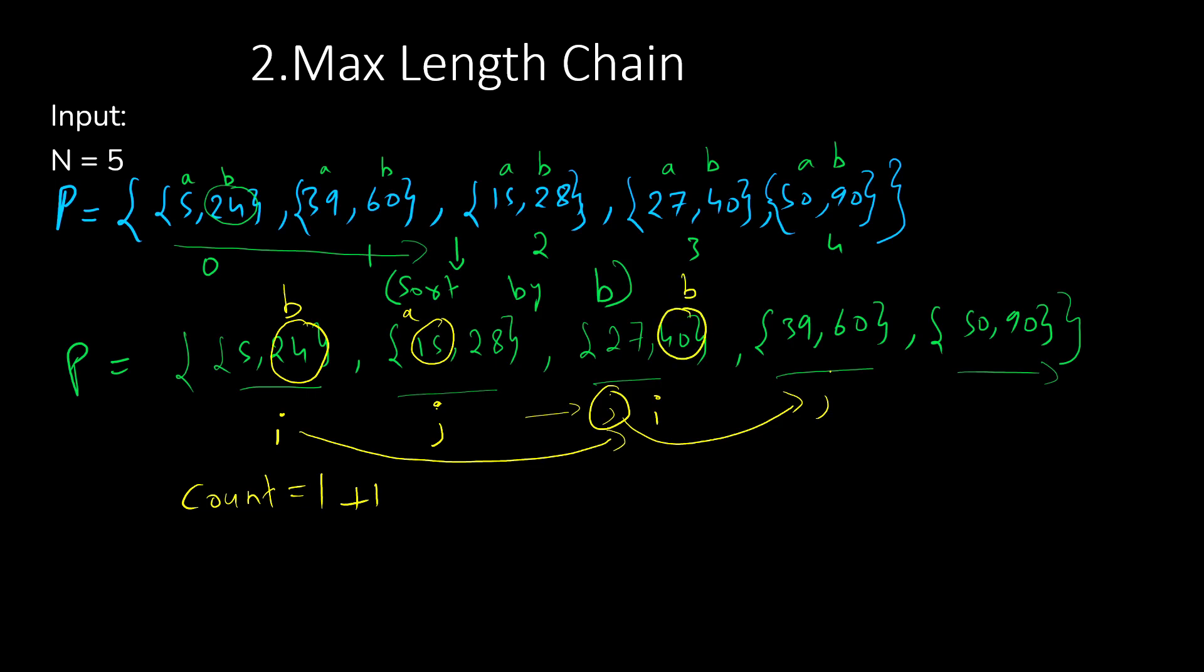It will check the same again. It will take the B object from I and A object from J index. Is B smaller than A? It is not, so it will update the J index. If it is smaller, then I will be coming to the jth position. If it is not smaller, then I will remain as it is. Now J has reached the last index.